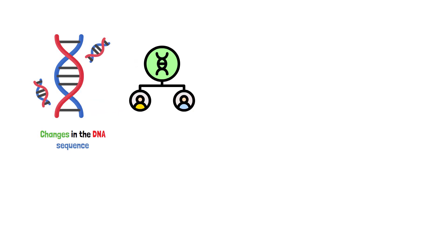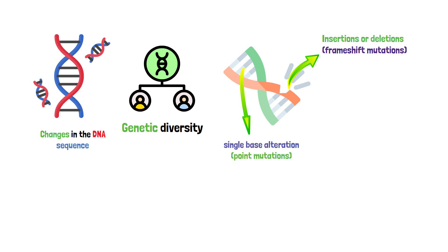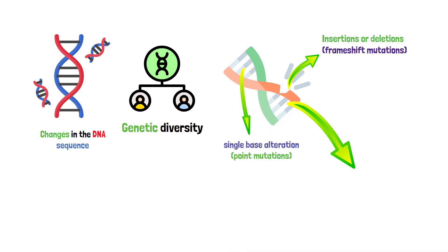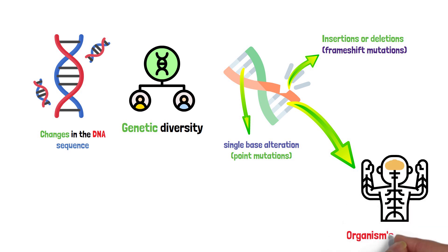Mutations, changes in the DNA sequence, are the source of genetic diversity. They can be simple, like a single base alteration (point mutations), or more complex, involving insertions or deletions (frameshift mutations). These mutations can have various effects, from benign variations to significant impacts on an organism's physiology.